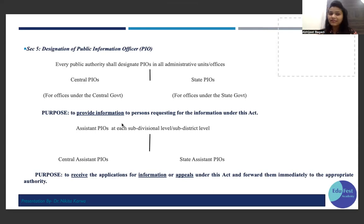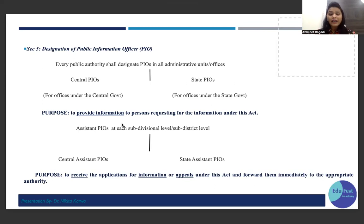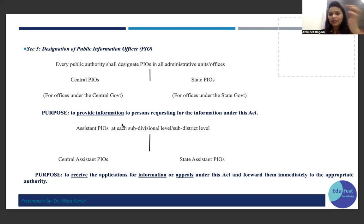From an exam point of view, the important part now starts. You need to know which officers and authorities exist under this Act, how many appeals can be filed, and in what time periods they must be disposed of. Every public authority must designate a PIO — Public Information Officer — in all administrative units or offices. If the office belongs to the central government, the PIO is called the Central PIO; if it belongs to the state government, it is the State PIO.